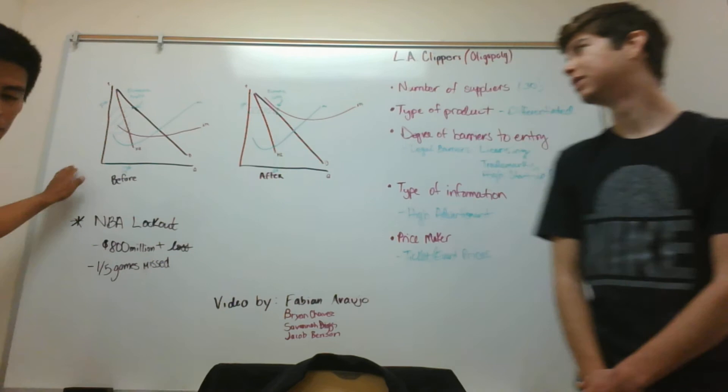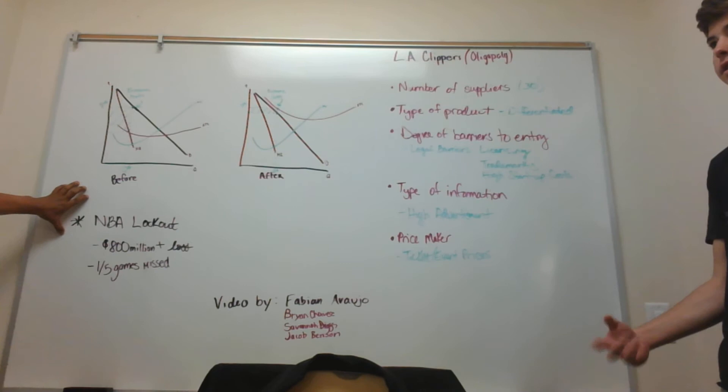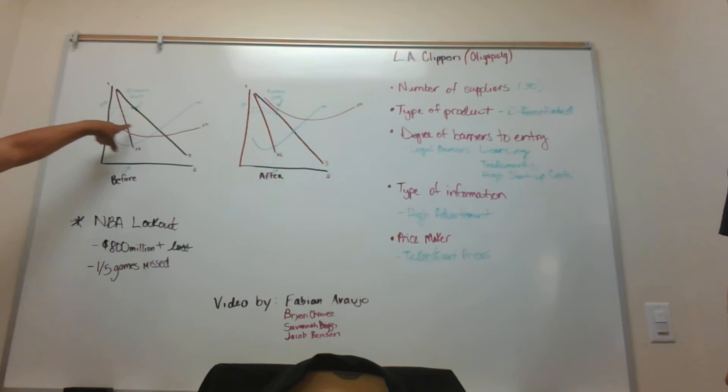Now we have an industry analysis of before and after an NBA lockout occurrence. Here we're working on economic profit because our average total costs are below our demand, so all they show is our economic profit and price.